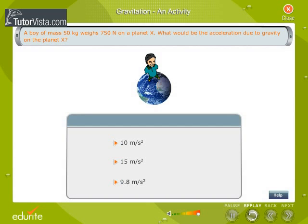A boy of mass 50 kg weighs 750 N on a planet X. What would be the acceleration due to gravity on planet X?